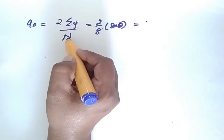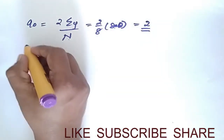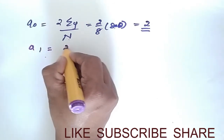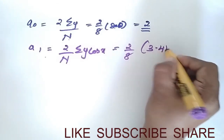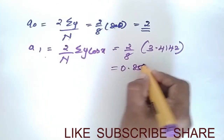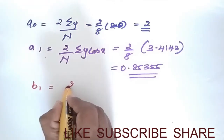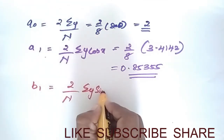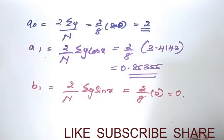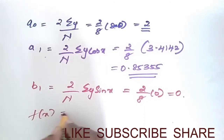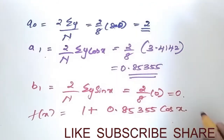Computing the coefficients: a0 = 2 × (Σy / n) = (2/8) × 8.0 = 2. A1 = (2/n) × Σy·cos(x) = 0.85355. B1 = (2/n) × Σy·sin(x) = 0.85355. Therefore the Fourier expression is: 1 + 0.85355·cos(x) + 0.85355·sin(x).